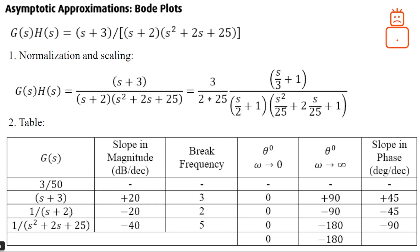The real pole at minus two will have a slope of minus 20 dB per decade, with a break frequency at two. It has zero phase at low frequency and minus 90 degrees at high frequency, with a slope of minus 45 degrees per decade.